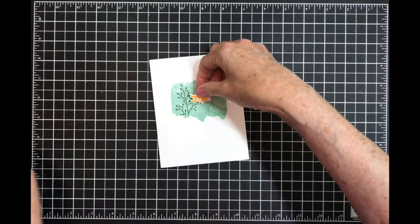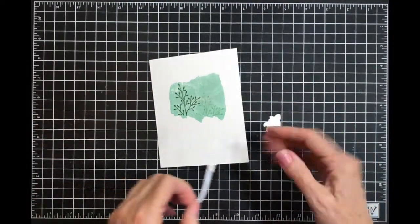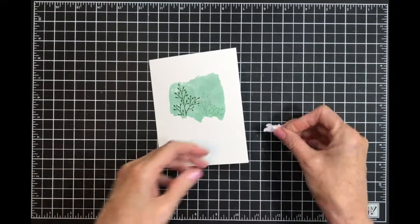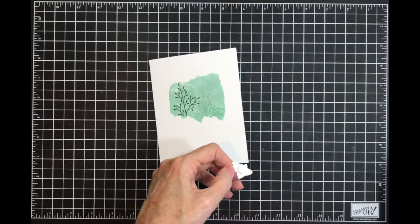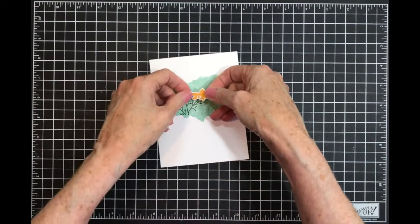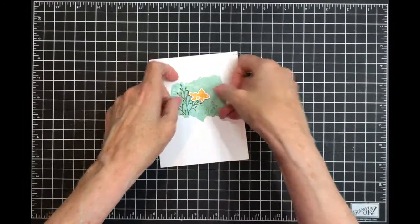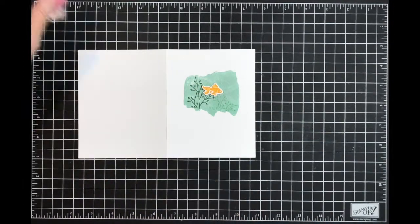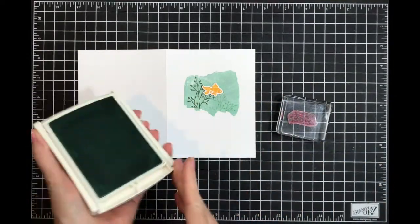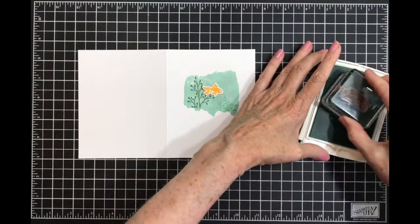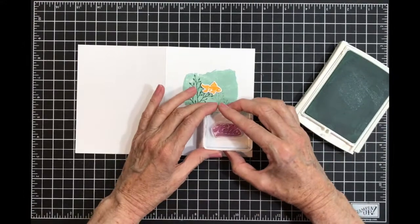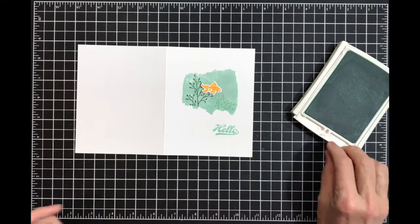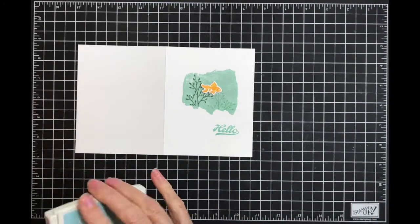Now my little fish has to go on with a dimensional. This is such a cute card and you can add more than one fish if you want. Then with my Pool Party ink, I'm going to stamp 'hello' from Jar of Love right down here. What a great card to send to a child - they'll love it.